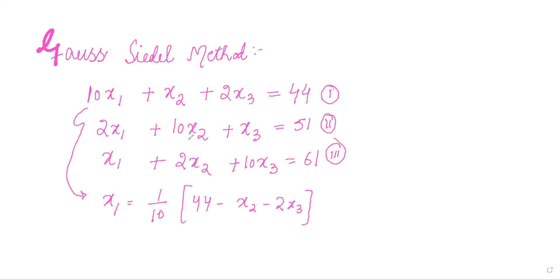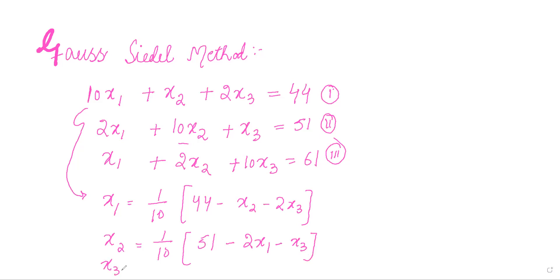From the next equation, we'll obtain the value of x2: x2 is equal to one-tenth of 51 minus 2 times x1 minus x3. And from the third equation, we'll obtain the value of x3, which equals one-tenth of 61 minus x1 minus 2 times x2.